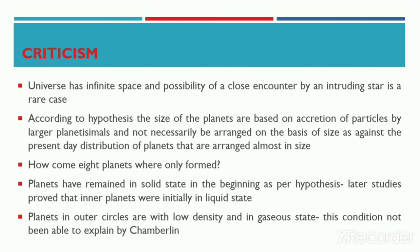From Mercury to Jupiter the planets increase in size, and from Jupiter to Uranus the size of the planets starts decreasing. Such an arrangement was not explained by the hypothesis and was criticized. Another question raised by scientists was how exactly eight planets were formed, and that also could not be explained.